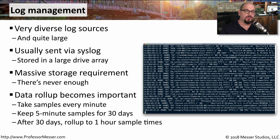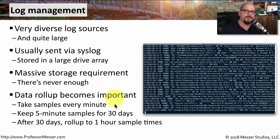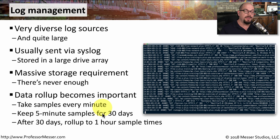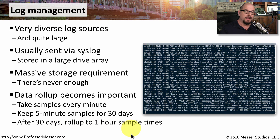As a way to better manage storage space, some people will roll up the data into larger sections as time goes on. For example, you may be gathering performance information across all of your devices every minute, allowing you to create a very detailed graph of exactly what happened every 60 seconds. But after 30 days, the granularity of that one-minute data point may not be as important, so you may roll up the information into five-minute samples. Then at the end of 30 days, you can take an average for an hour and simply store a single hourly value for that period.